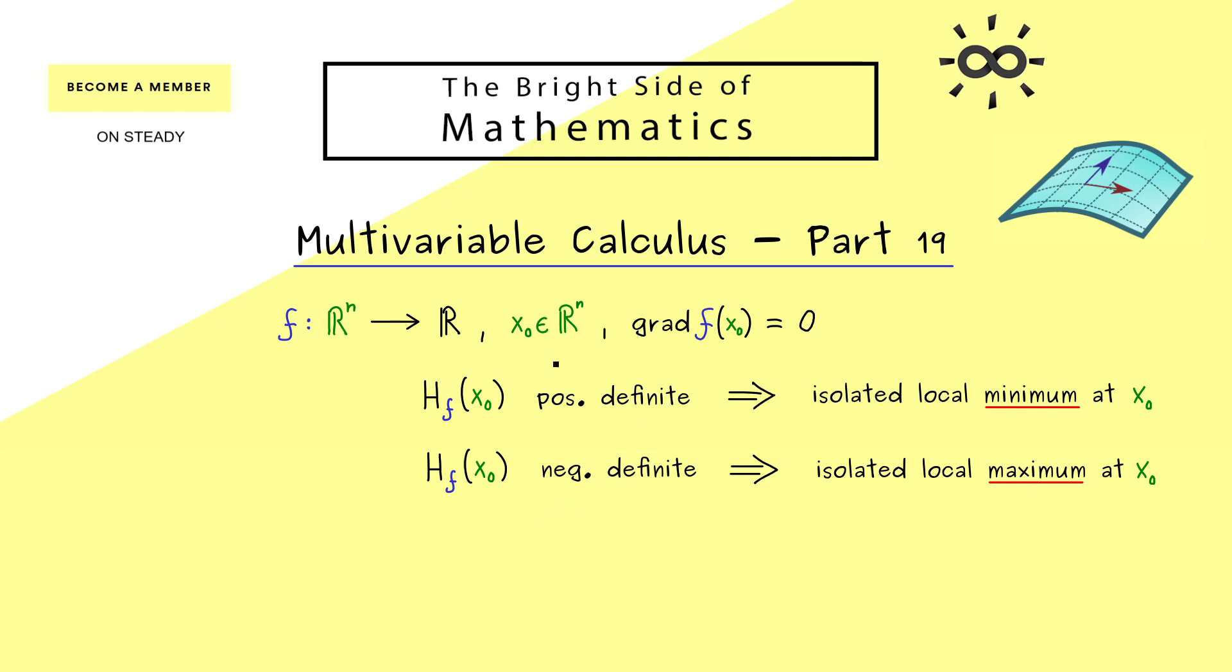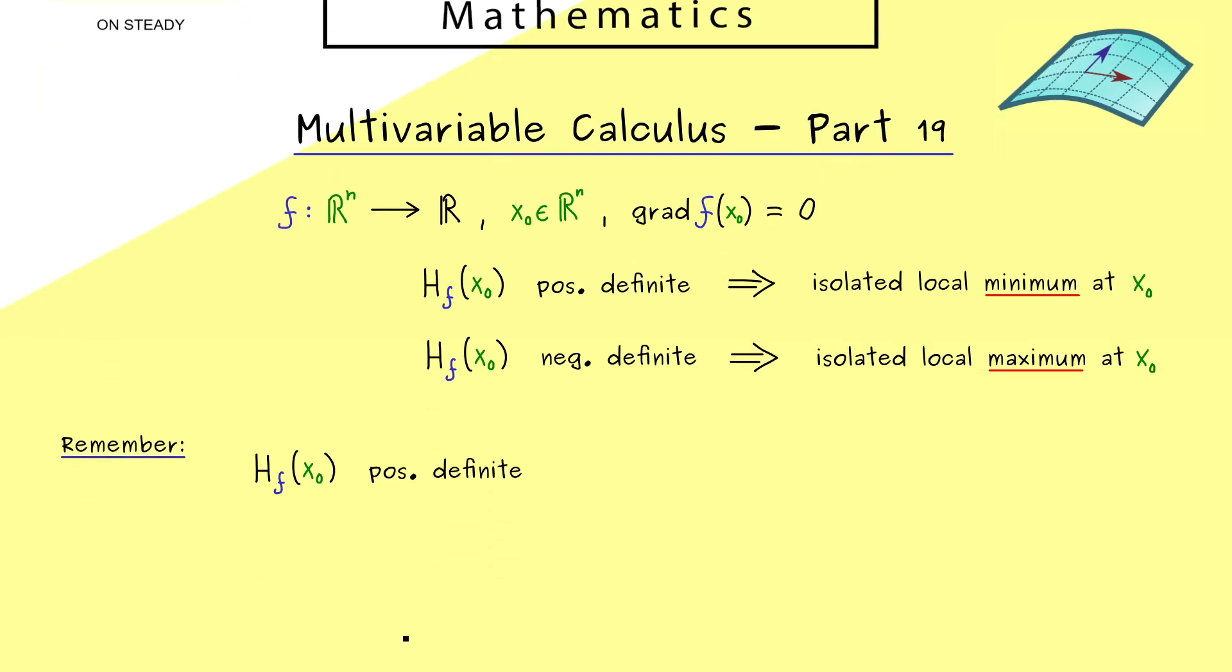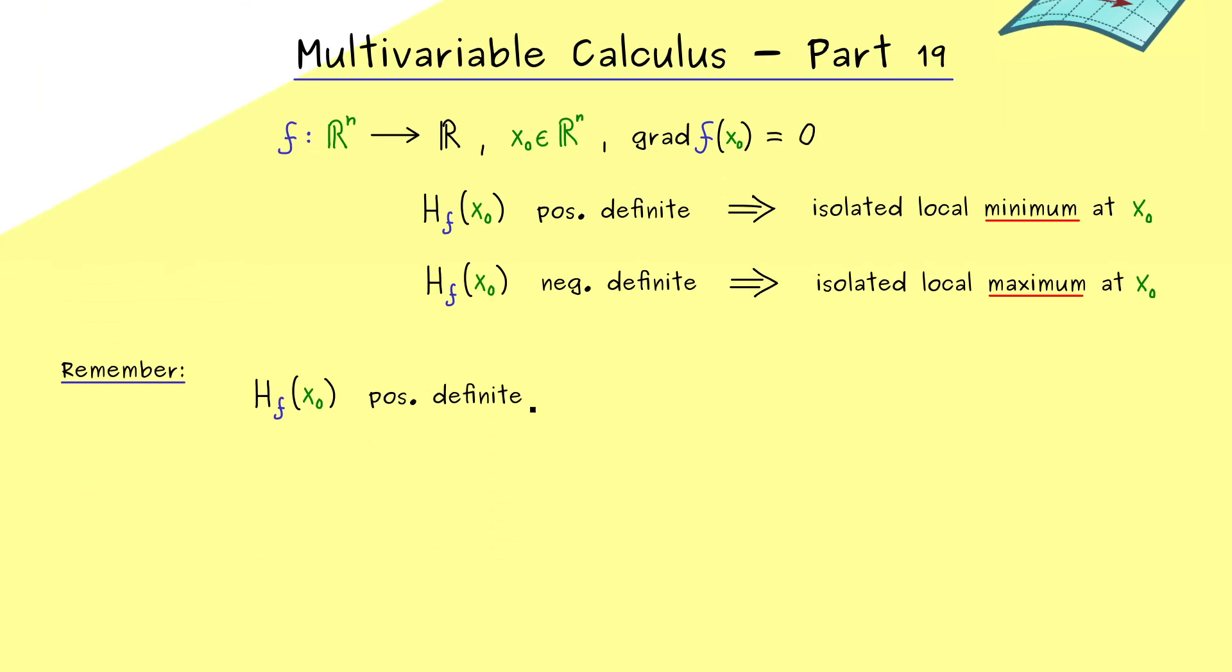So we see the Hessian, this special square matrix, in some cases can give us enough information such that it guarantees the existence of local extrema. Hence in these cases you only have to know how you can check for a positive definite or negative definite matrix. In fact there are different possibilities for that and in this video here we will discuss some of them.